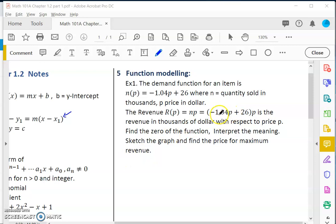Notice that this function is a linear part times another p. If you multiply them out it is obviously a quadratic function and we know quadratic functions are parabolas. In this case, r of p would equal negative 1.04 p squared plus 26p. The leading coefficient is negative and the power is even, so we know it's a parabola facing downward.